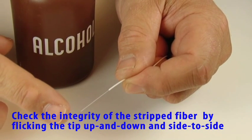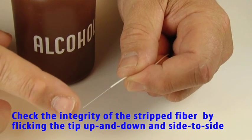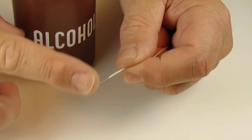Check the integrity of the stripped fiber by gently flicking the end of the fiber tip up and down and side to side.